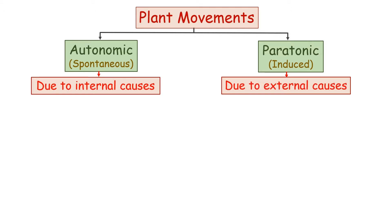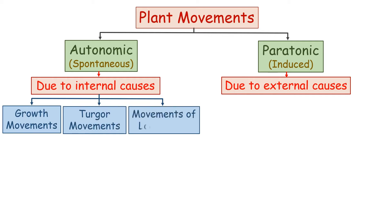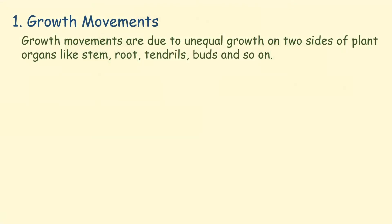Autonomic movements are of three types: growth movement, turgor movement, and movement of locomotion. Growth movements are due to unequal growth on two sides of plant organs like stem, root, tendrils, buds, and so on.